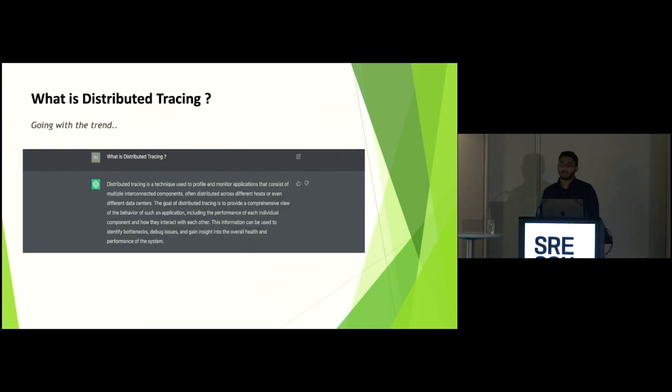So as per the trend now, I just asked ChatGPT, what is distributed tracing? So as per ChatGPT, it is a distributed tracing technique used to profile and monitor applications that consists of multiple interconnected components, often across distributed systems.